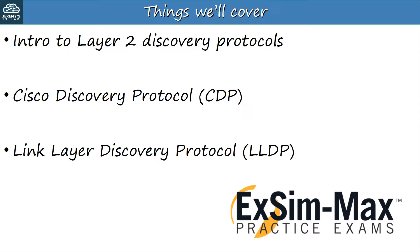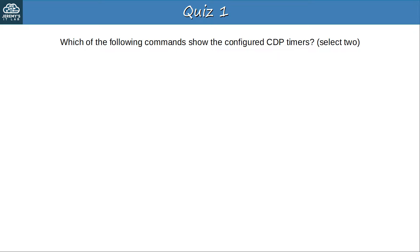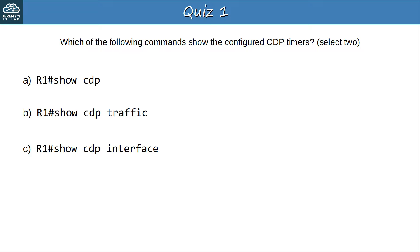Let's move on to the quiz. Question 1: Which of the following commands show the configured CDP timers? Select 2. A: SHOW CDP. B: SHOW CDP TRAFFIC. C: SHOW CDP INTERFACE. D: SHOW CDP NEIGHBORS. The answers are A and C. Both of these commands show the configured CDP message timer and hold time. SHOW CDP NEIGHBORS does show the current hold time counting down, but it doesn't show the actual configured hold time or the CDP message timer.